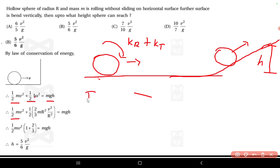Here we have ω², so ω equals v/R, so it becomes v²/R². This equals mgh.